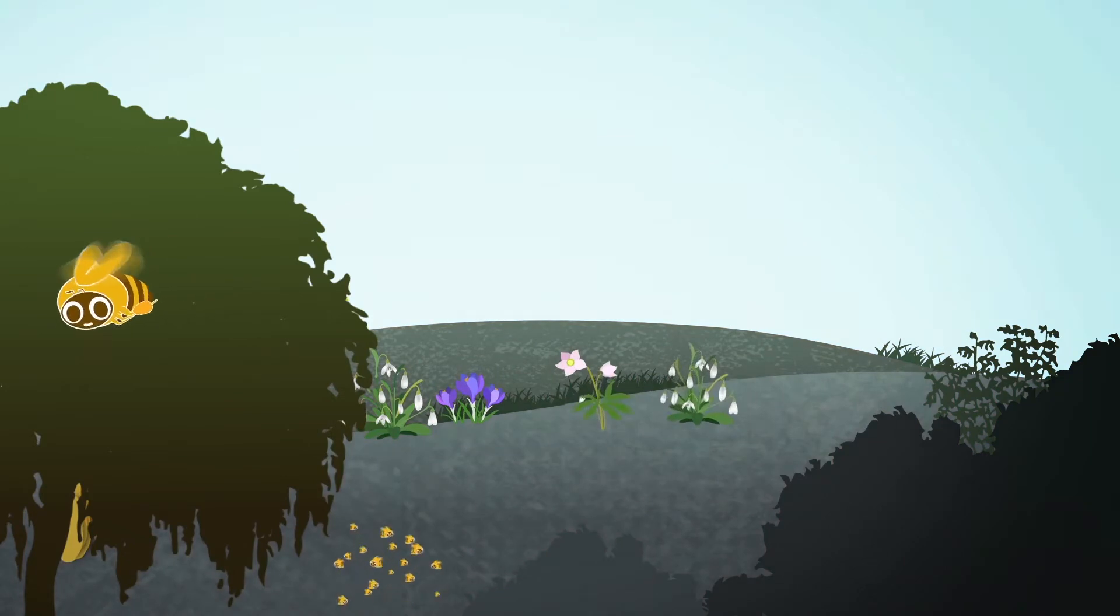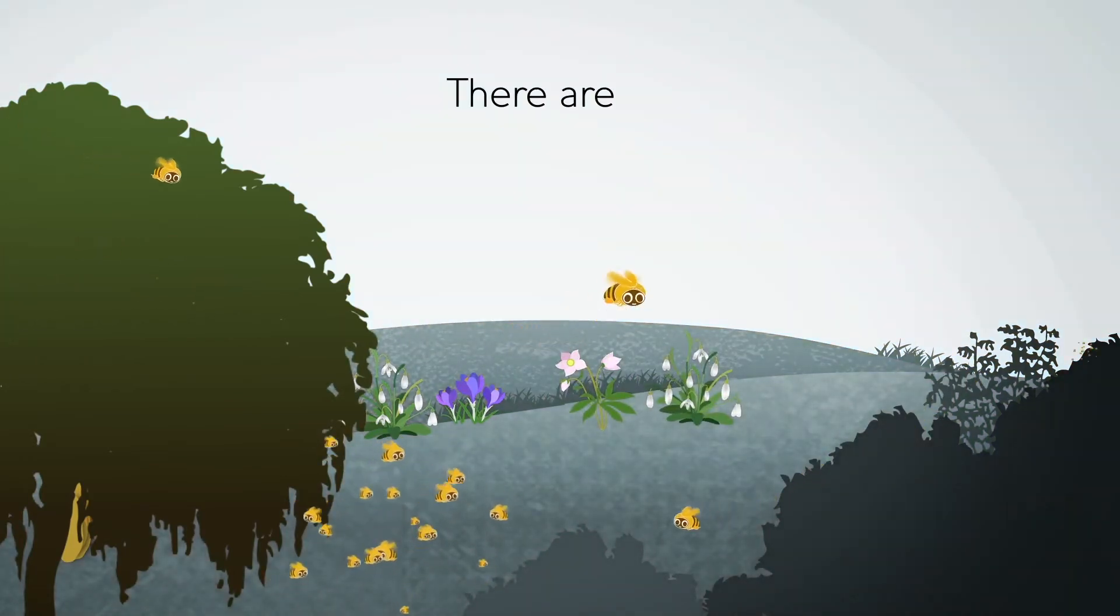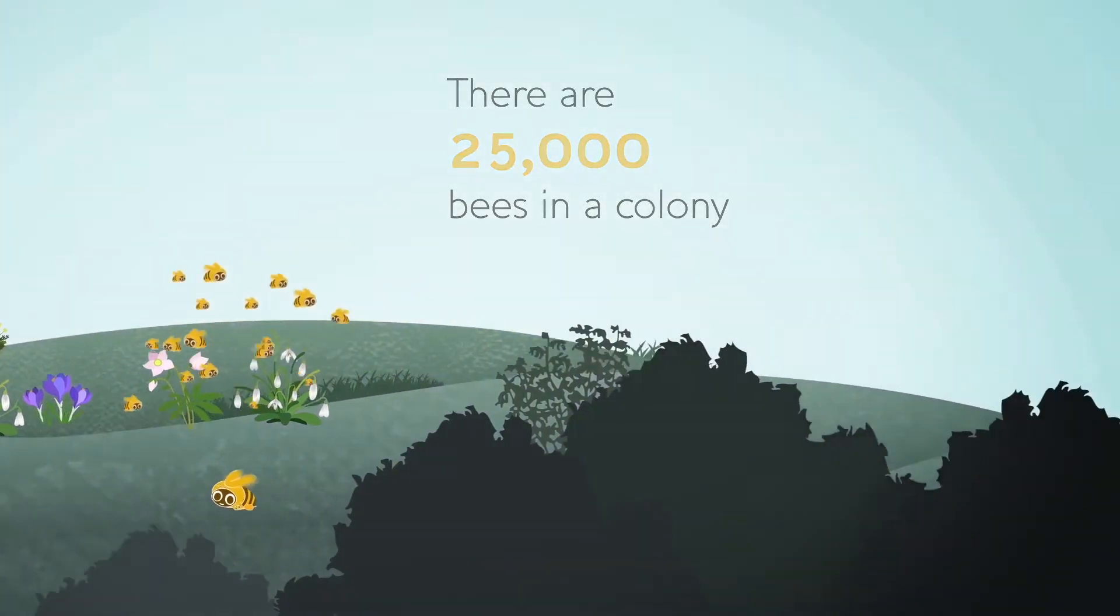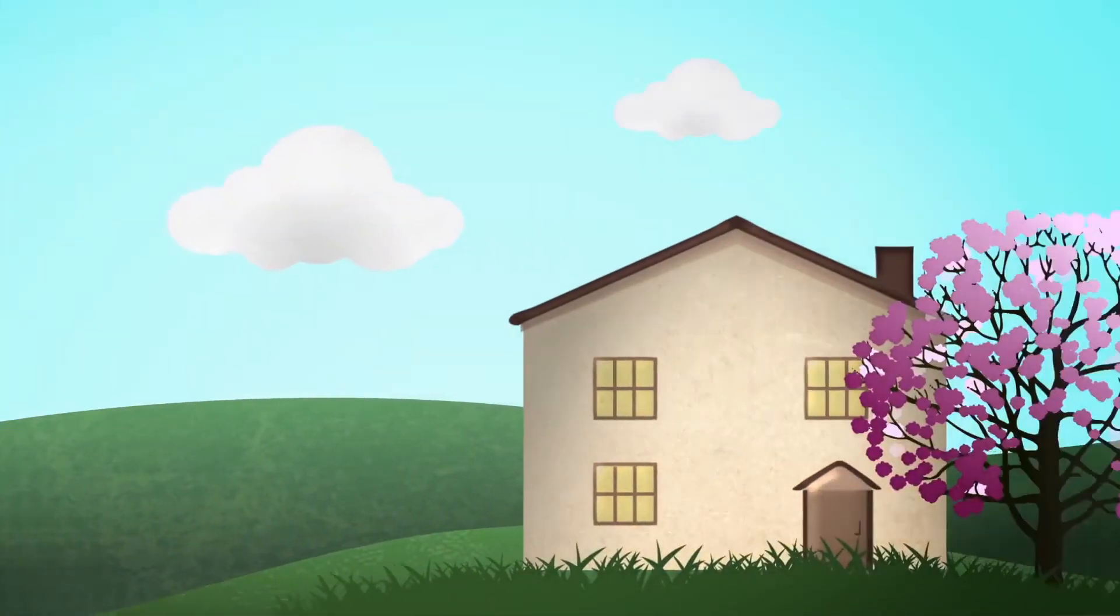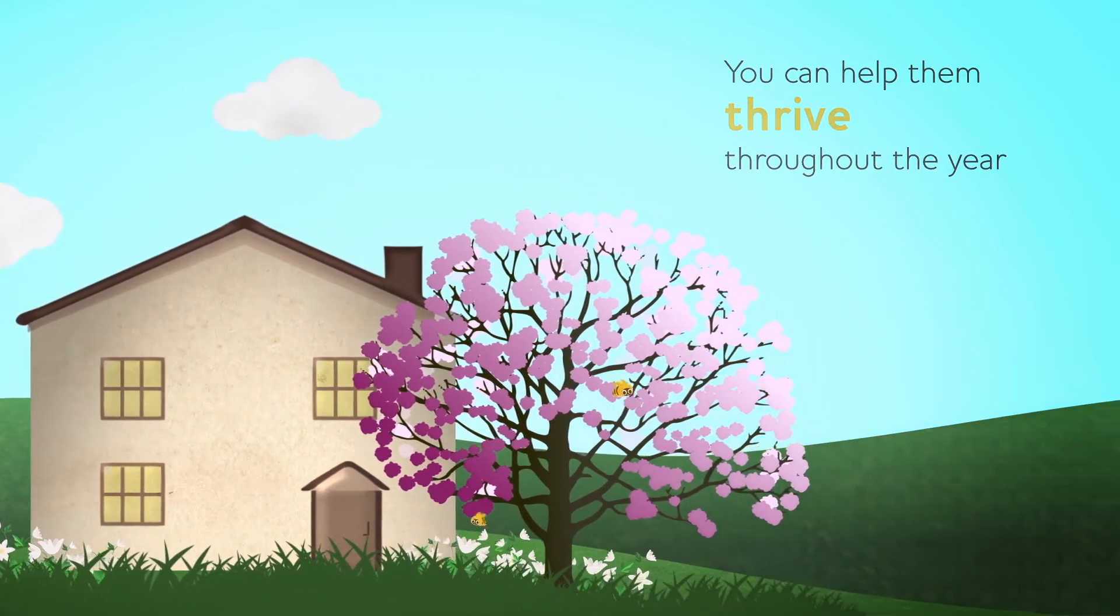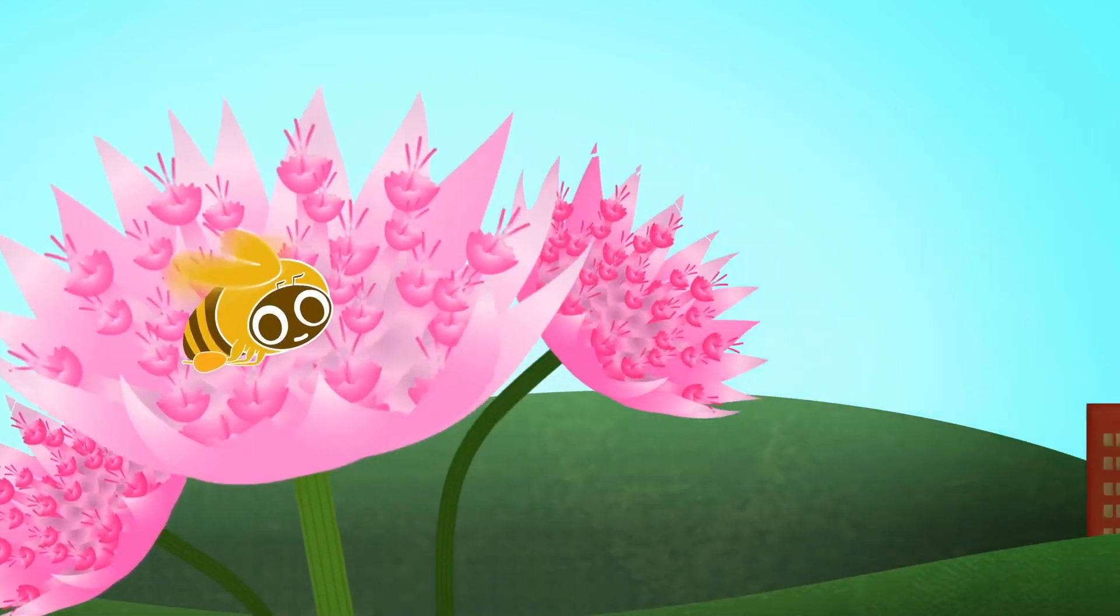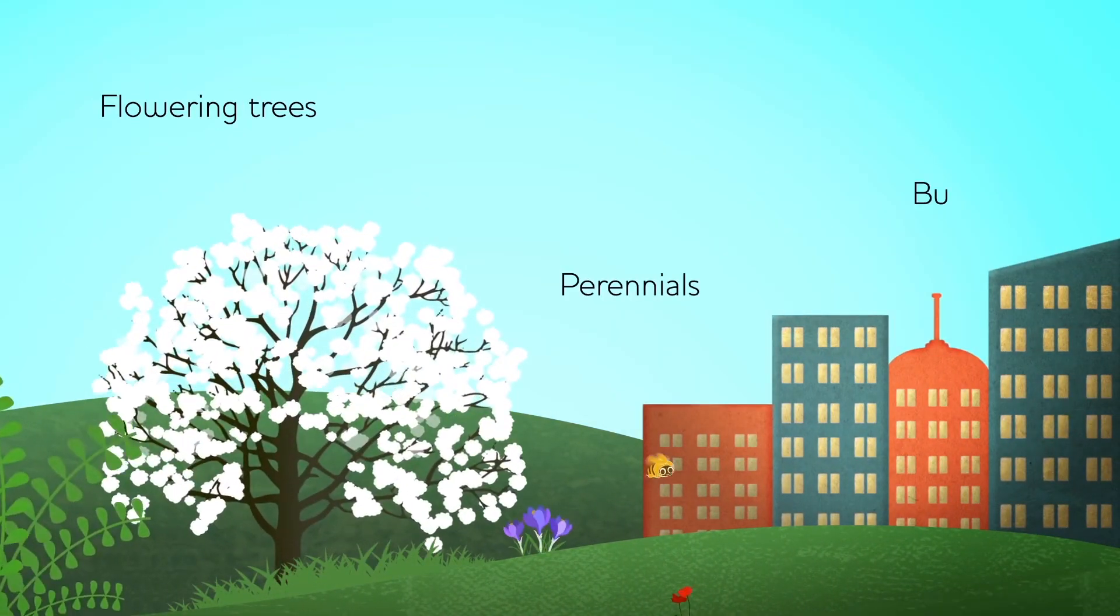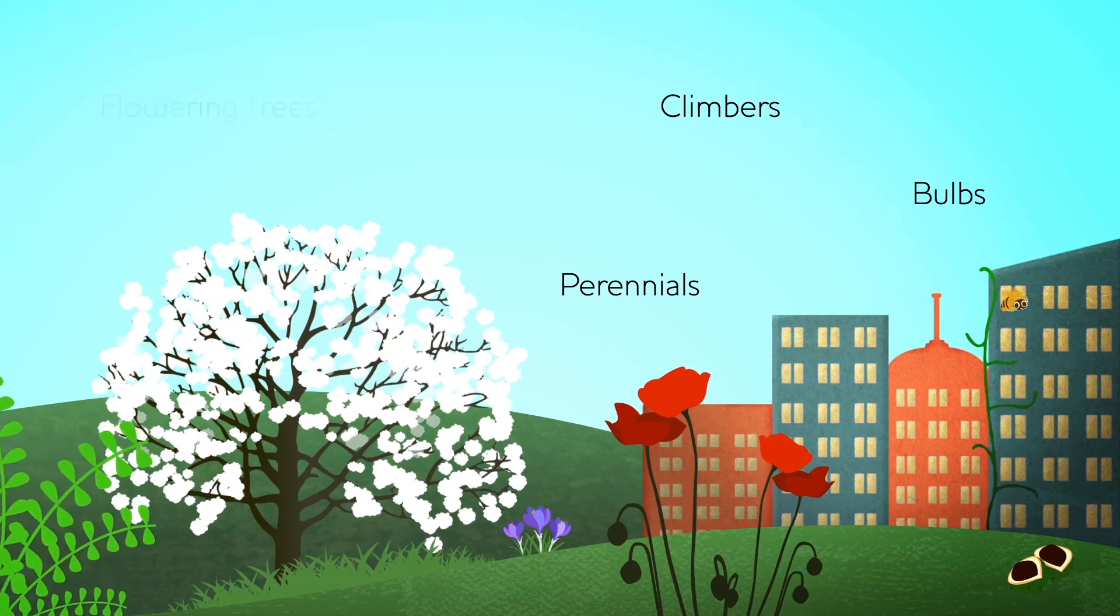enough honey for the colony to survive through the coldest months. With 25,000 bees in a colony, that's a lot of honey. By planting specifically for honey bees, you can help them thrive throughout the year. Each season there are many planting options to support the honeybee, from flowering trees to perennials, bulbs, and climbers. The sheer variety of